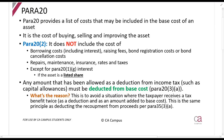So what can be included in the base cost of an asset? Paragraph 20 tells us what may be included. It is basically the cost of buying the asset, selling the asset, and improving the asset.